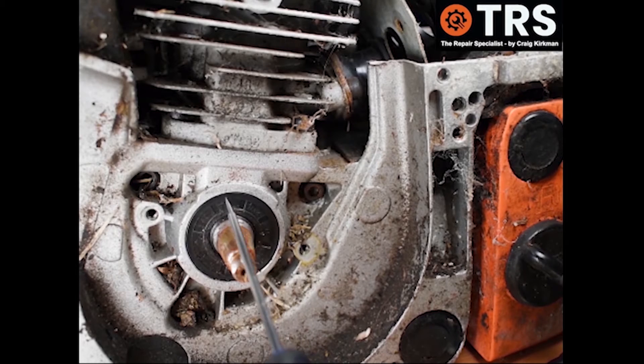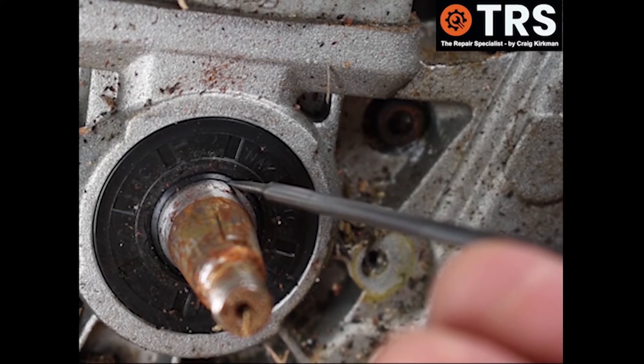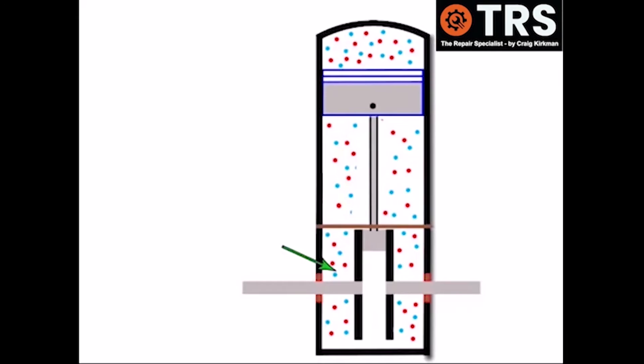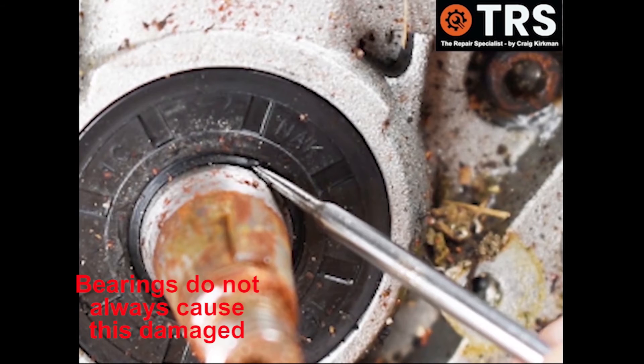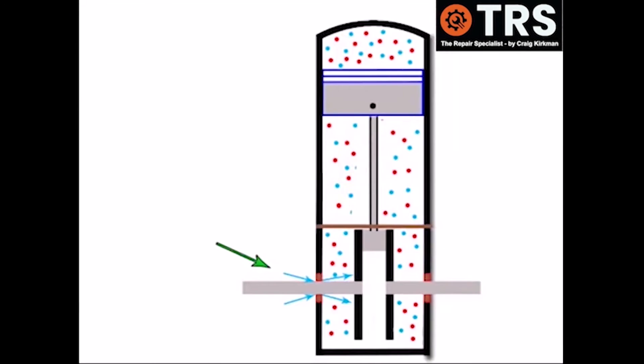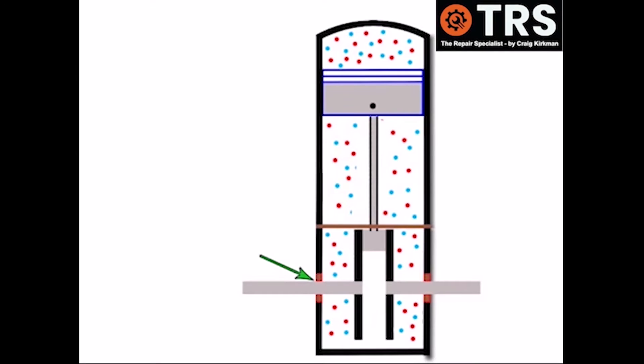Of course there is a fix for this but it's not a simple one. Generally the engine has to be stripped down to replace these and it's always recommended that the bearings behind them are changed at the same time because when the seals degrade it's because the bearings have degraded and there's up and down movement in the crankshaft and that's what's pushed against the seals and damaged them. So this kind of work might have to be undertaken by a professional because the engine has to be stripped down and the crankcase has to be parted. It's about as large as a job gets on a two-stroke engine.